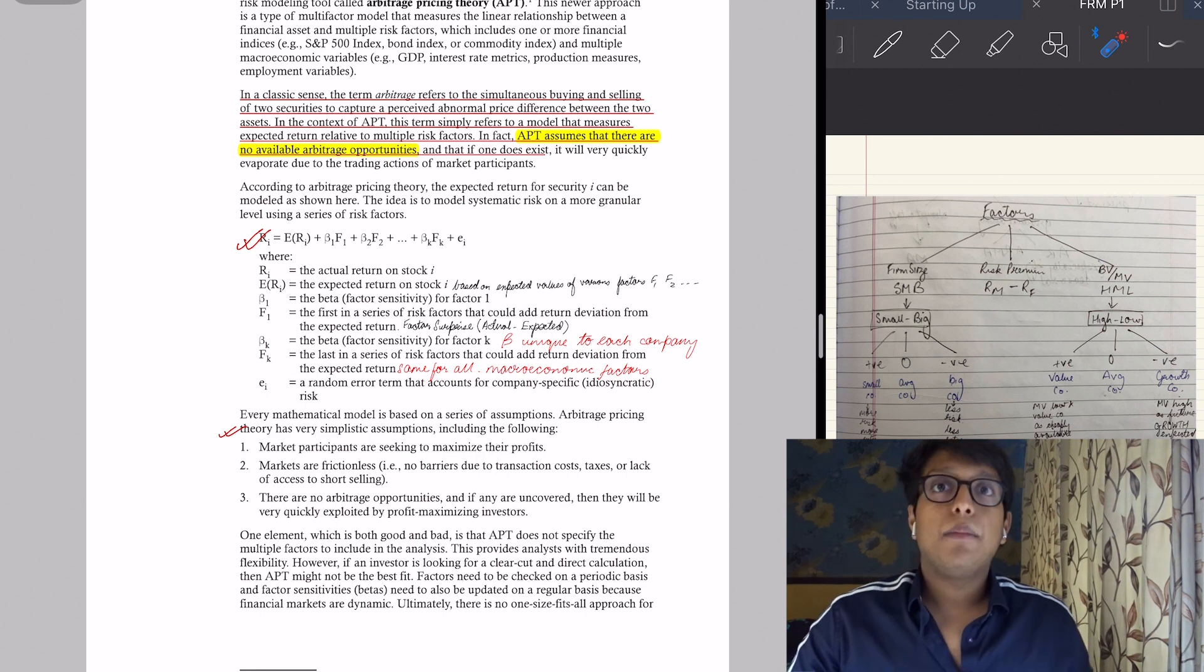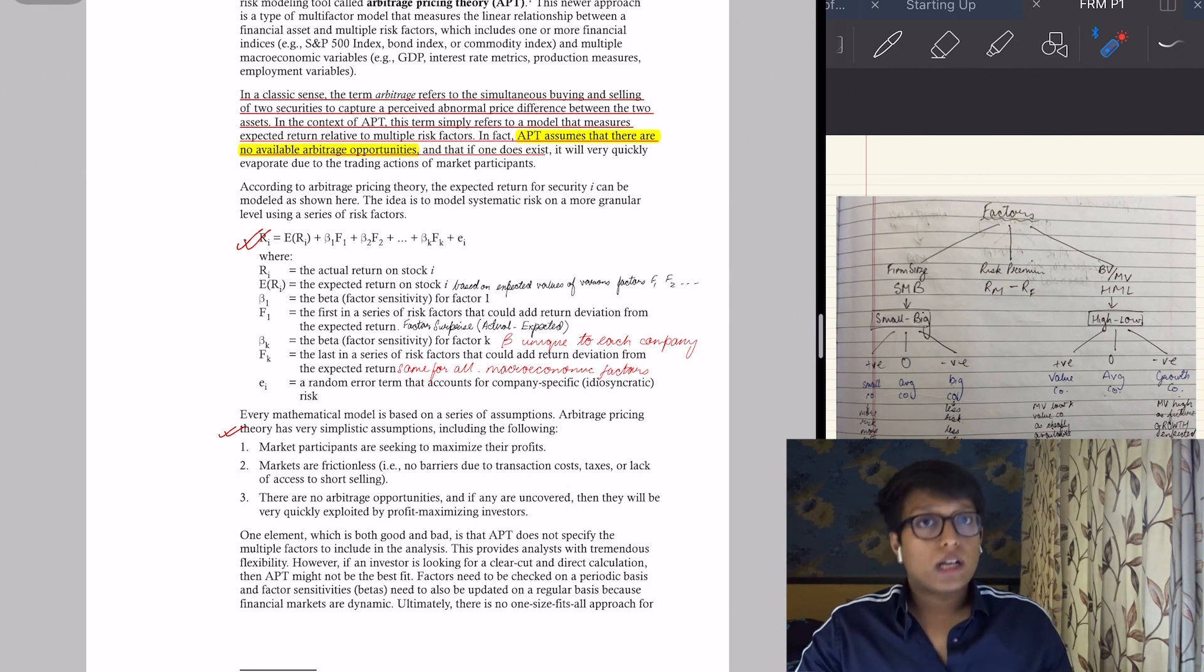What he says is that arbitrage means there will be pricing errors and you can capitalize on those pricing errors. But this model assumes that there are no pricing errors, and even if there are, they will be quickly evaporated due to market participants.